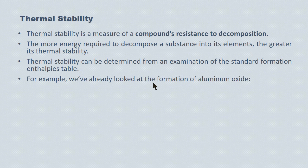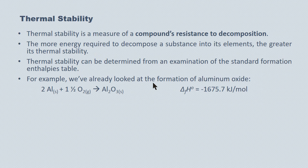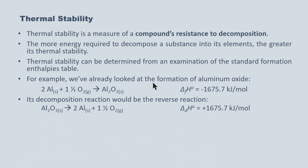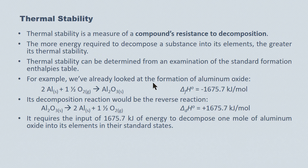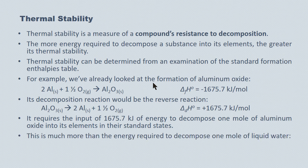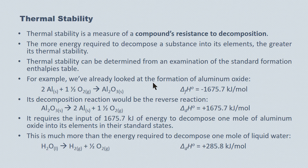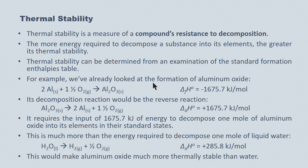For example, the formation of aluminum oxide releases 1675.7 kilojoules per mole formed, so its decomposition — the reverse reaction — requires the input of 1675.7 kilojoules of energy, making aluminum oxide relatively thermally stable. By comparison, the decomposition of water only requires 285.8 kilojoules, making aluminum oxide much more thermally stable than water.